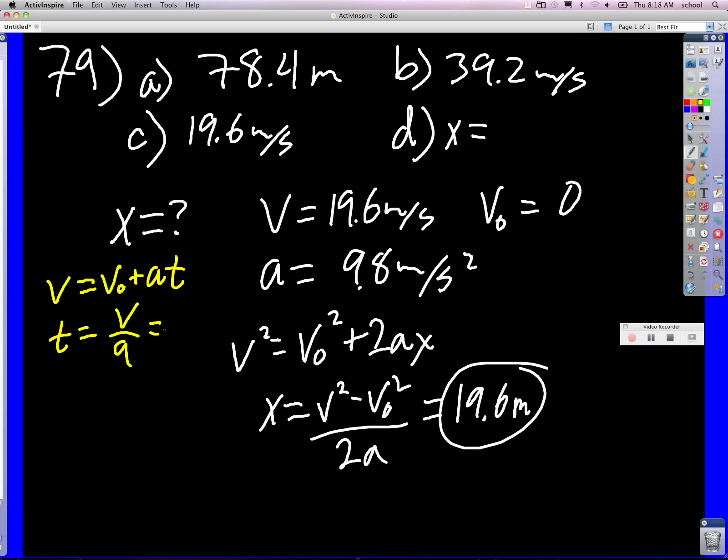Does that make sense? And then I can go ahead and use x equals v zero t plus one half a t squared. So basically I'm saying 5 times 4, which gives us 20, which is the same as this.